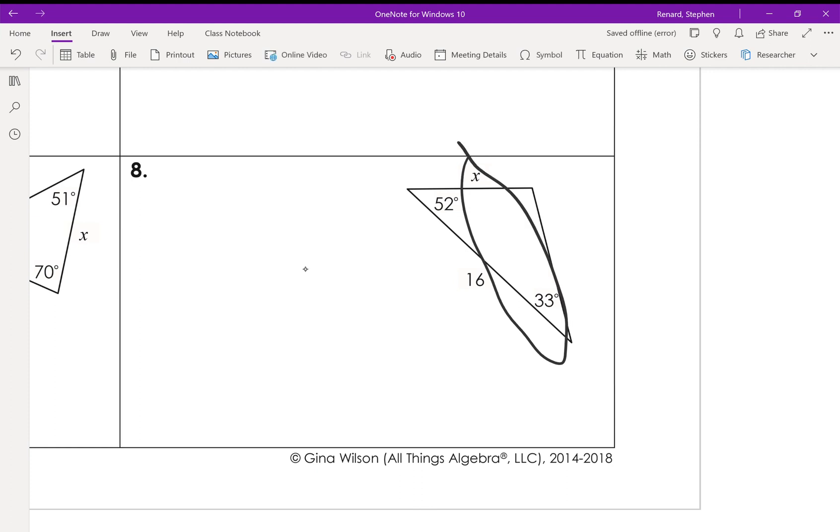We have that 33 and x. So, we could start off by going sine of 33 over x, but we don't have anything to match it up with. We don't have this side to where we could match it up with a 52, and we don't have this angle where we could match it up with a 16. Now, we can't find that angle with the tools we currently have.